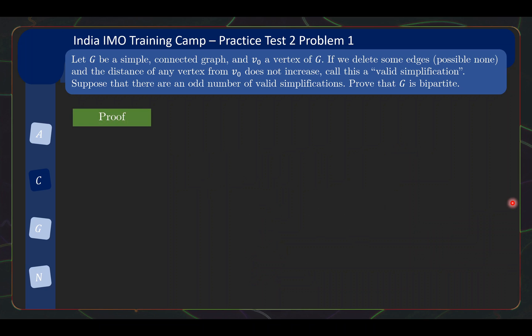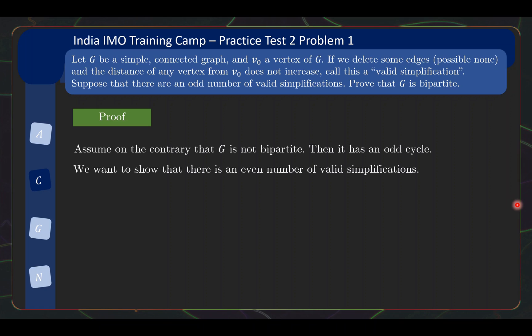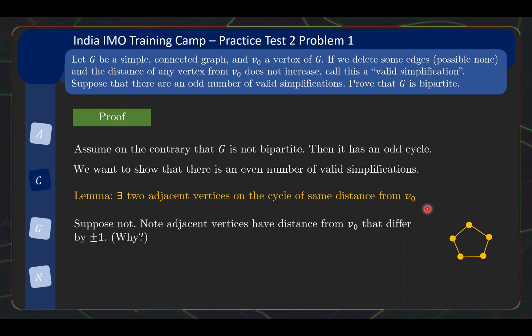So this leads us very naturally to our proof. As I've mentioned in the motivation, we can assume on the contrary G is not bipartite then it has odd cycle and we want to show that there's an even number of valid simplifications. So for the first maybe, we formulate it as a lemma. There exist two adjacent vertices on the odd cycle of same distance from V0. Now, this is not too difficult to prove. How do we prove this? Even though we don't know how the odd cycle is connected to V0, how we prove it is quite straightforward.